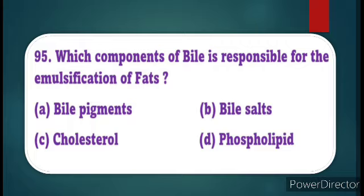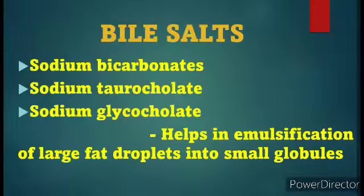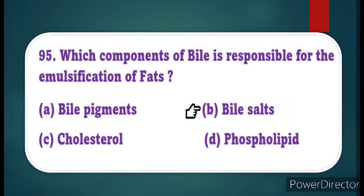Question number 95: Which component of bile is responsible for the emulsification of fats? All four options are components of bile. Among these four components, the one responsible for emulsification of fat is bile salts. Bile salts are sodium bicarbonate, sodium taurocholate, and sodium glycocholate. These bile salts help in emulsification of large fat droplets into small globules. The answer is option B, bile salts.